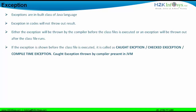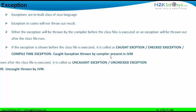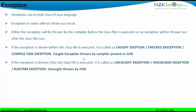If the exception is shown before the class file is executed, it is called a caught, checked, or compile-time exception. Caught exceptions thrown by the compiler are present in your JVM — whatever exceptions are caught before the class file is run are found in the JVM compiler. Some exceptions are thrown after the class file is executed; those are called uncaught, unchecked, or runtime exceptions, and they are also thrown by the JVM.